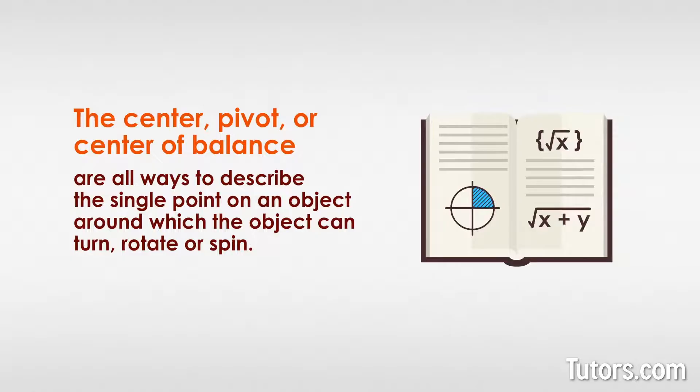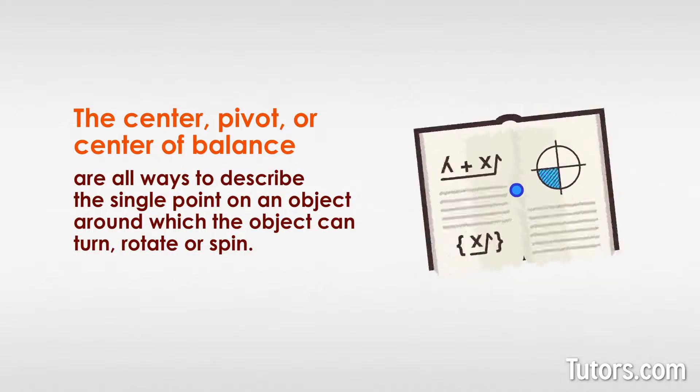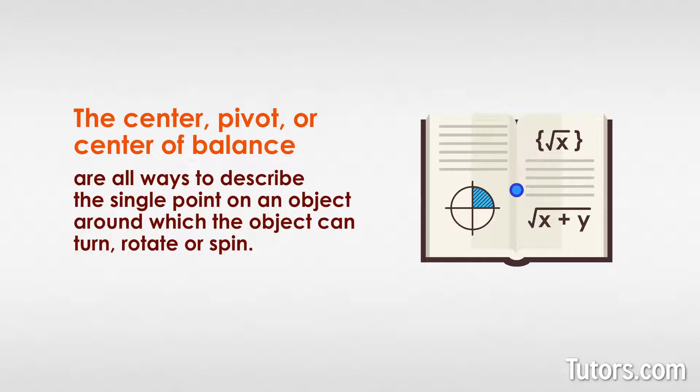Think of your mathematics textbook. Can you find a spot on it that allows the book to balance on your index finger? When you find that spot, you have the center of the object. The rectangle that is your mathematics textbook can be rotated around that center to find its rotational symmetry.